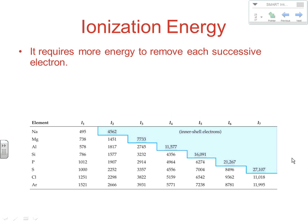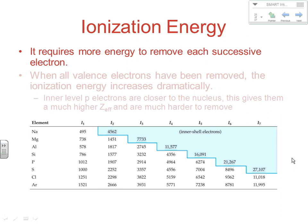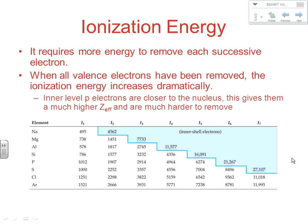You can see that on the table here. For sodium, 495 increases to 4562. For magnesium, 738 increases to 1451, then increases to 7733. It always requires more energy to remove the next successive electron. When all the valence electrons have been removed, a huge jump in ionization energy occurs.